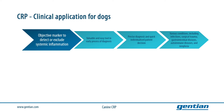CRP can be elevated in various conditions including infections, surgical trauma, gastrointestinal diseases, autoimmune-mediated conditions, and also cancer. CRP can be used at different stages of the clinical process depending on the underlying conditions.